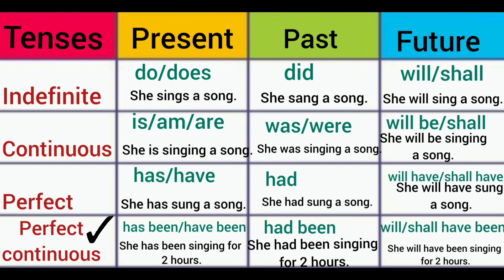Then it's time for perfect continuous tense. Only the helping verbs are changed; all the sentence structures are the same. For present perfect continuous tense, has been and have been are used — she has been singing for two hours. Since and for are also used in perfect continuous tenses. Had been is restricted for past perfect continuous tense — she had been singing for two hours. For future perfect continuous tense — she will have been singing for two hours.